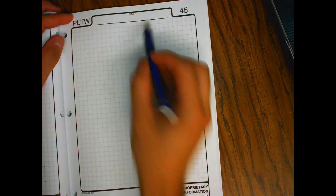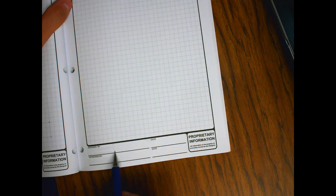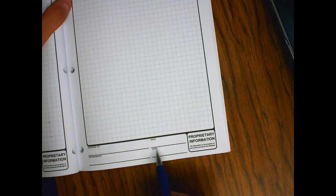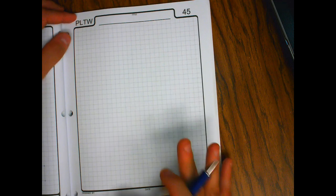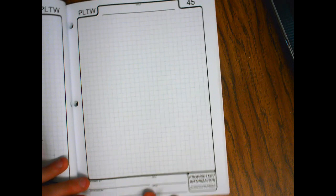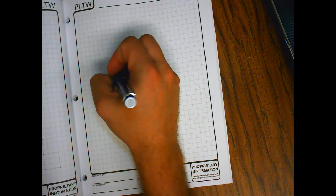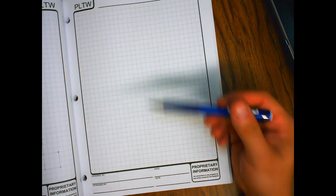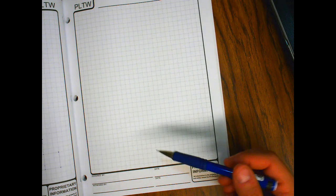This is an engineering notebook page. You'll notice up at the top there's a title. You look down here, it says designed by, witnessed by, and then the date. Depending on what you're doing will determine how you orient your page. A lot of times you'll have your page this way if you're sketching out something or making a list, or maybe you're in a coding class and you're trying to make some pseudocode.